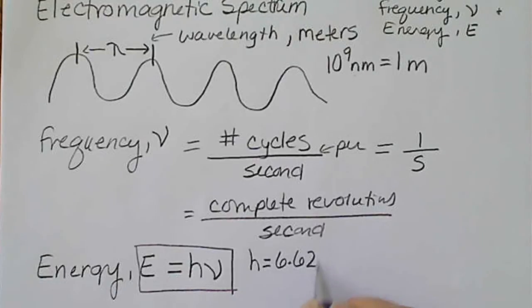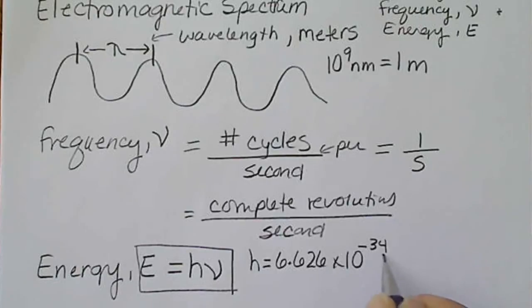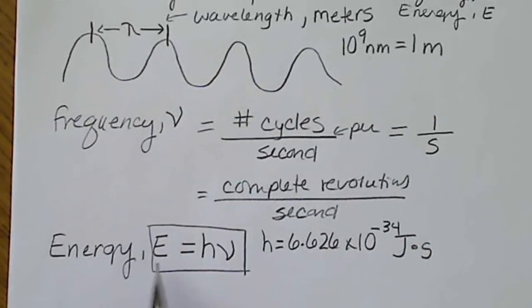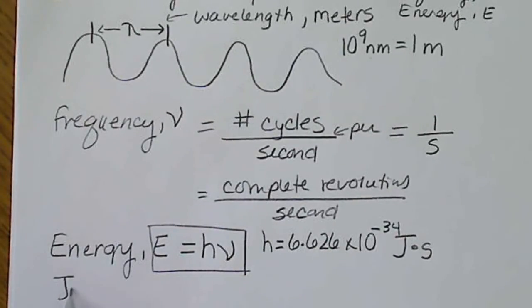6.626 times 10 to the negative 34. And that's a joule times the second. So the typical energy unit that we'll use will be a joule.